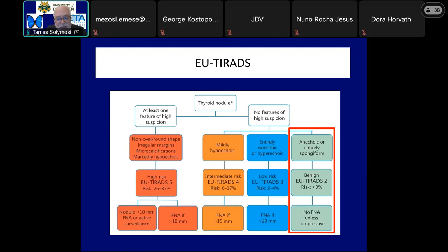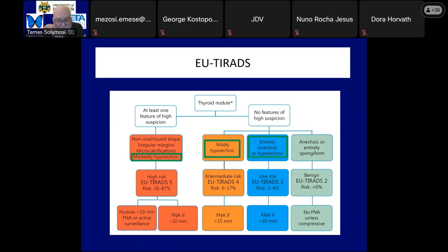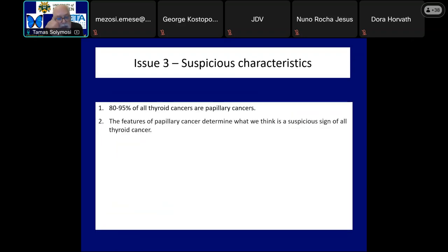We will discuss the classification systems in many chapters later in the course. There are two forms of cysts in which we do not count on malignancy: entirely spongiform or anechoic nodules. In all other nodules, the basis of our decision is nodule echogenicity, which itself decides the classification in more than 95% of nodules, because less than 5% of non-hypoechoic nodules present with suspicious signs. We should never forget that suspicious signs mean suspicious of papillary cancer. Because the overwhelming majority of thyroid cancers are papillary tumors, the features of papillary cancer determine what we consider a suspicious sign for all thyroid cancer.